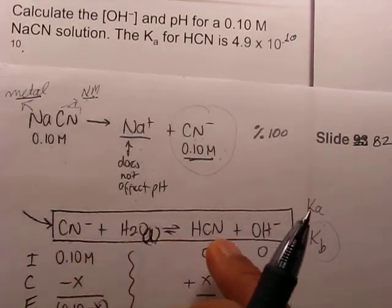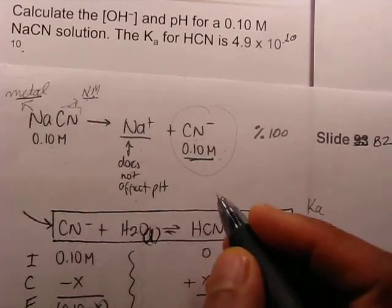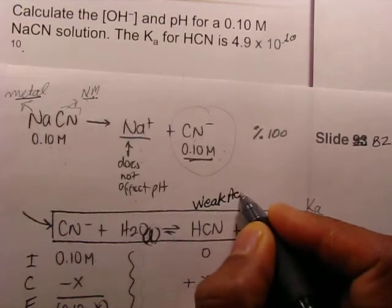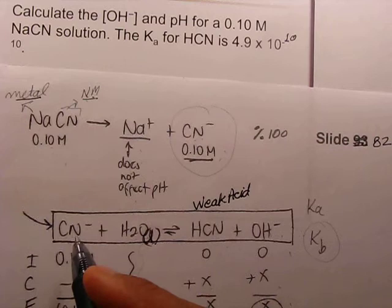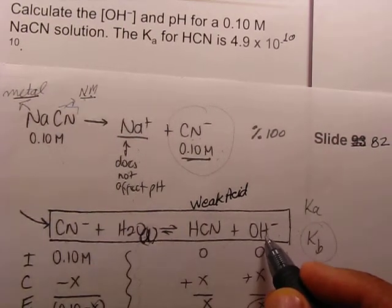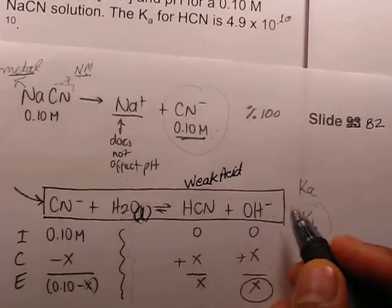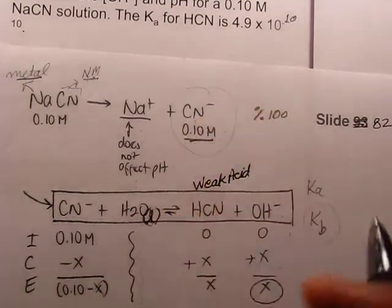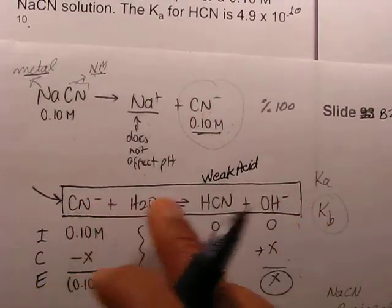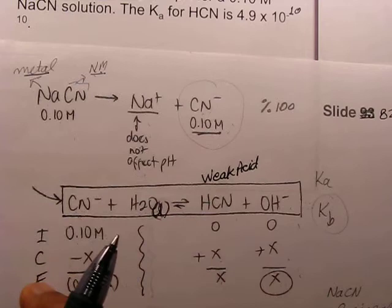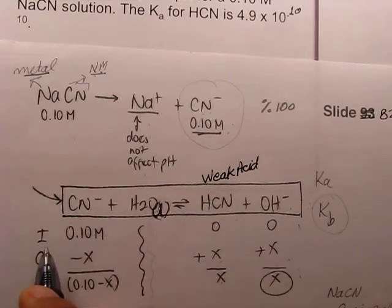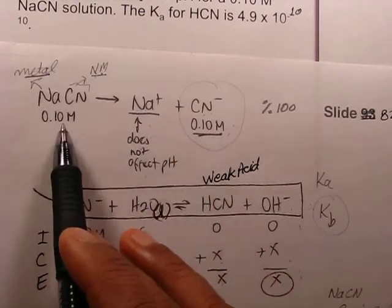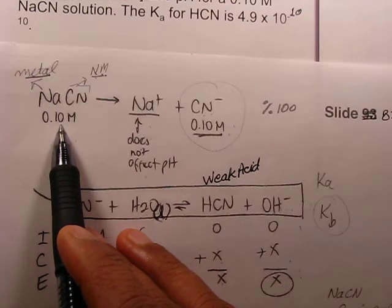When cyanide ion reacts with water, it forms HCN, which is a weak acid. The cyanide ion accepts a proton from water and hydroxyl ion concentration increases. So the resulting solution will be basic. Whenever we work with a weak acid or weak base, we use the ICE chart.